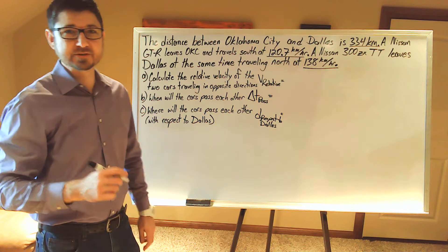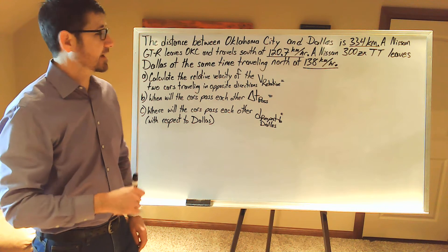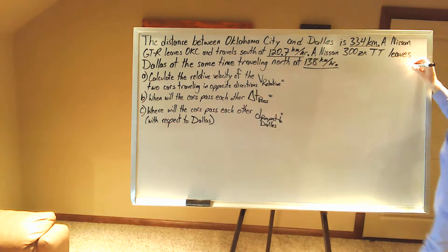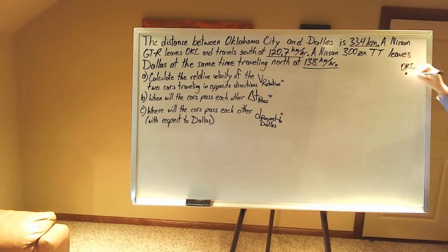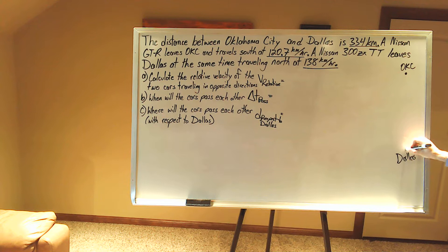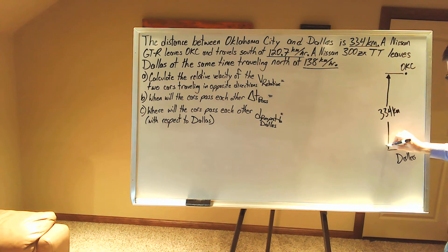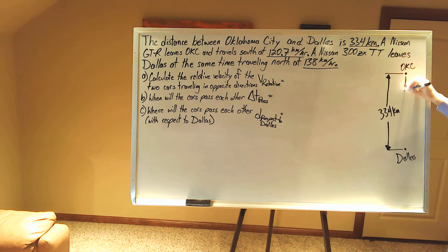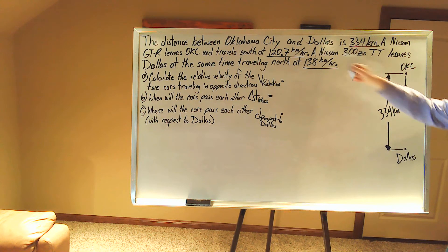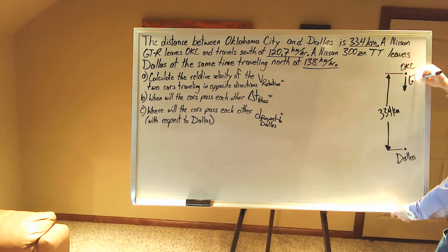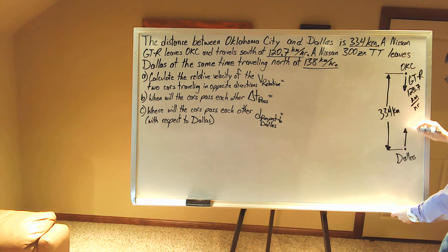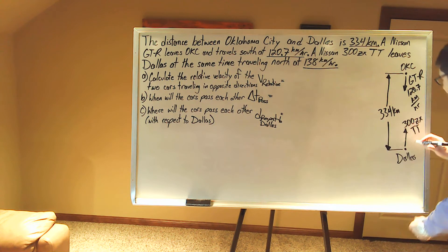The next thing we need to do is draw a simple picture of our cars and which directions they're headed in. We know Oklahoma City is north of Dallas and the distance between the two cities is 334 kilometers. We have a GT-R headed south with a velocity of 120.7 kilometers per hour, and then we have a 300ZX Twin Turbo headed north at 138 kilometers per hour.